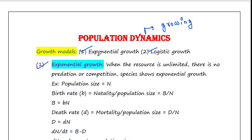This model says when the resource is unlimited and there is no predation or competition, a species shows exponential growth. This is unusual — can you expect unlimited resources with no stress, no competition in your life? However, we have to understand the model.